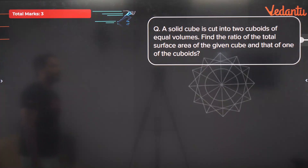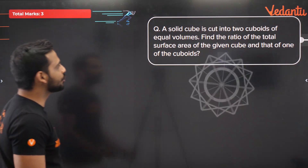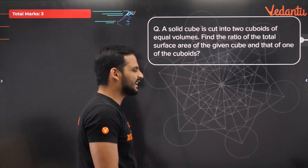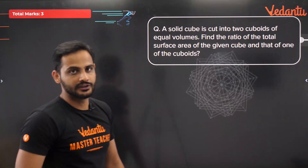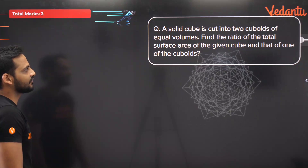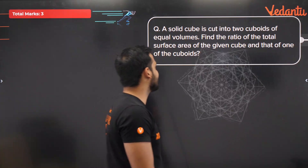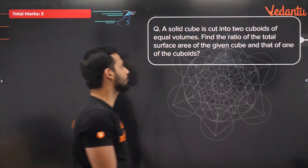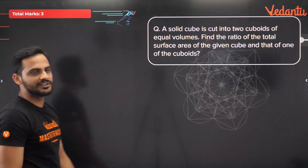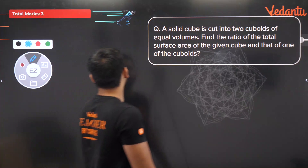Question 3: A solid cube is cut into two cuboids of equal volumes. Find the ratio of the total surface area of the given cube to that of one of the cuboids. Suppose you have a cube of side a.